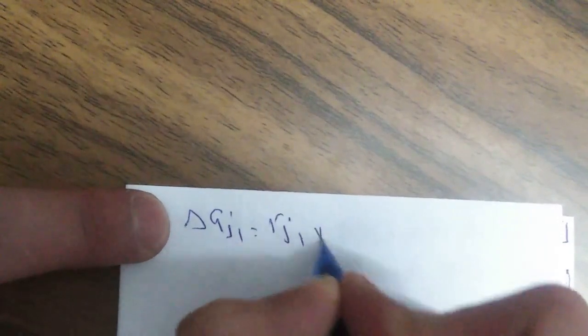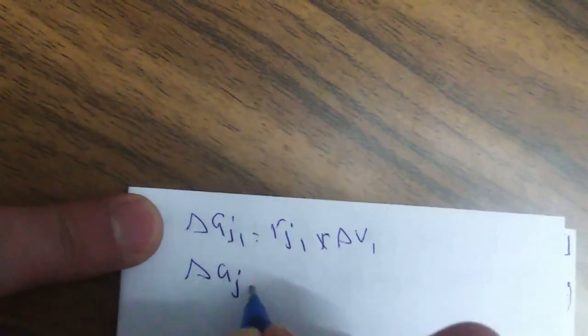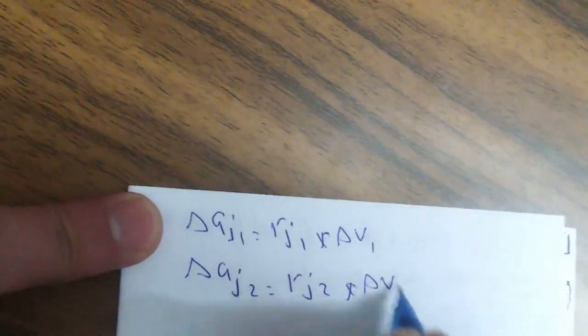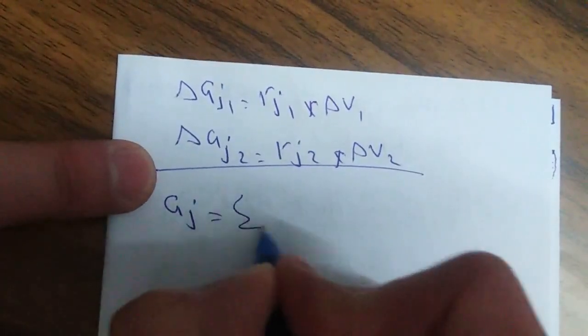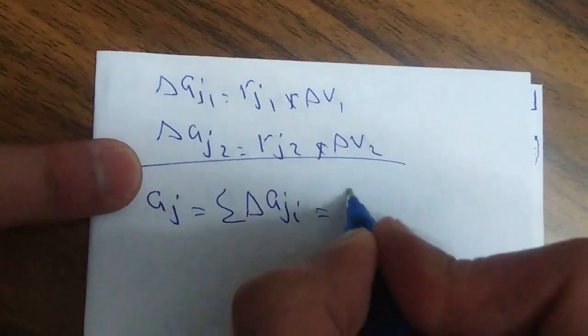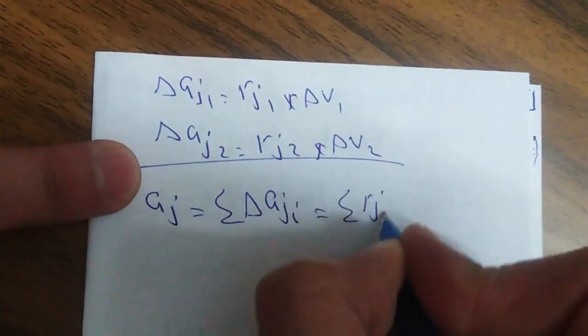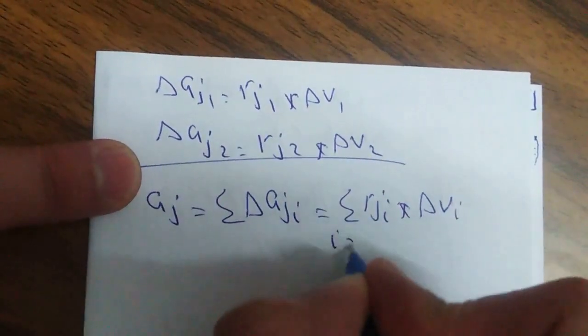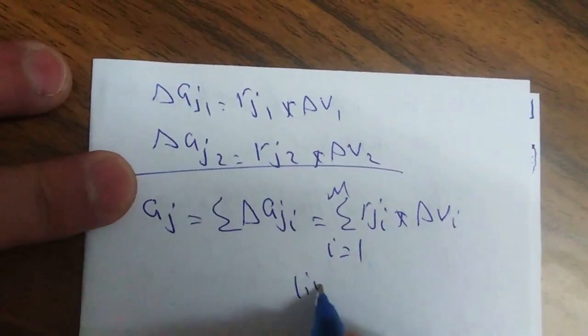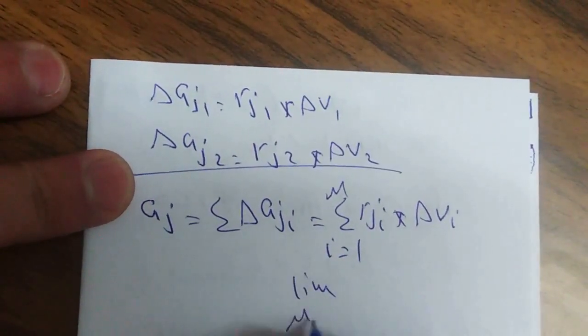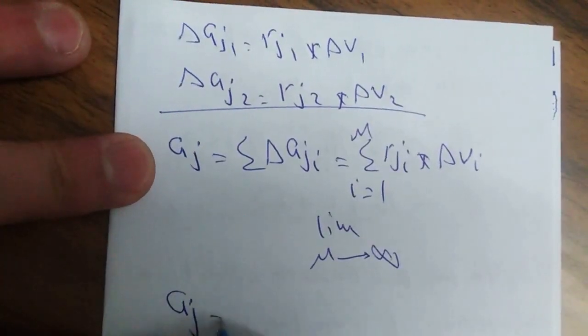فبقدر أعرف delta G_j1 تساوي r_j1 times delta V_1، delta G_j2 تساوي r_j2 times delta V_2. وبالتالي فإن generation term في حالة non-spatially uniform سيكون summation لـ r_ji times delta V_i، حيث أن i تبدأ من 1 وتعبر 2، 3 لغاية ما أوصل m.